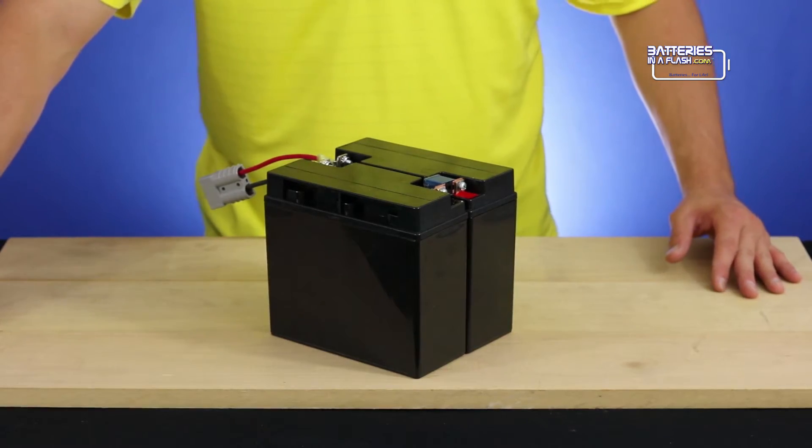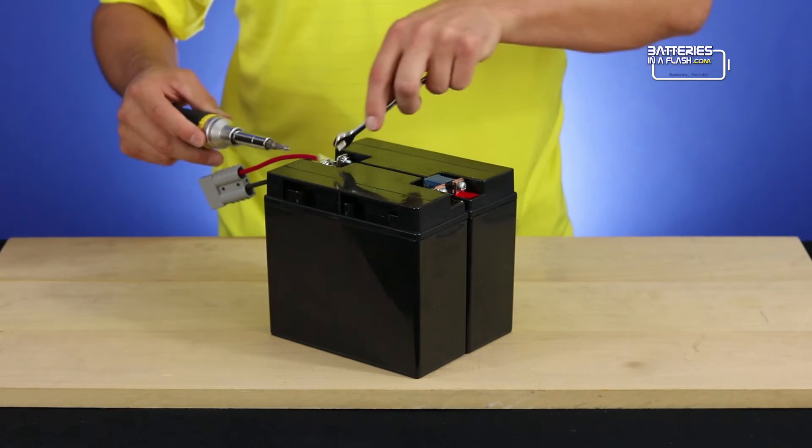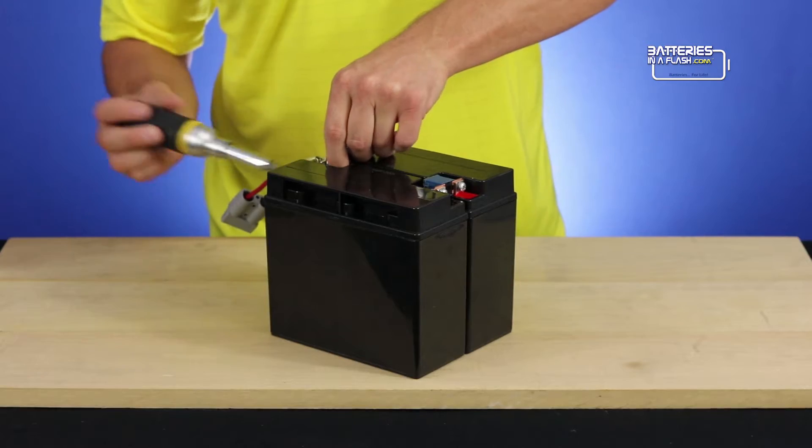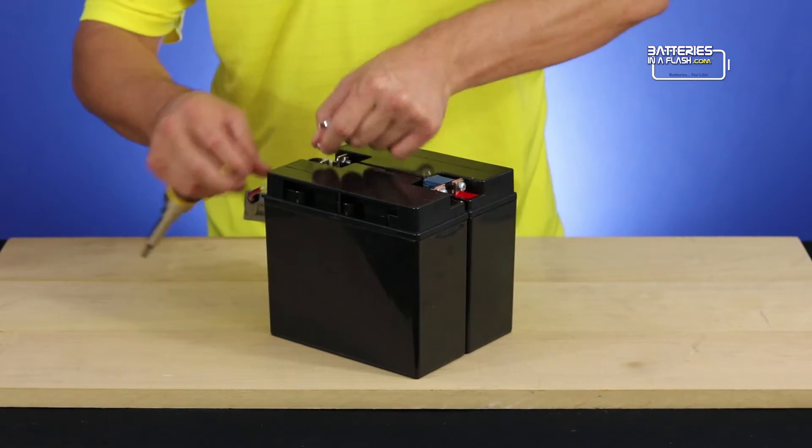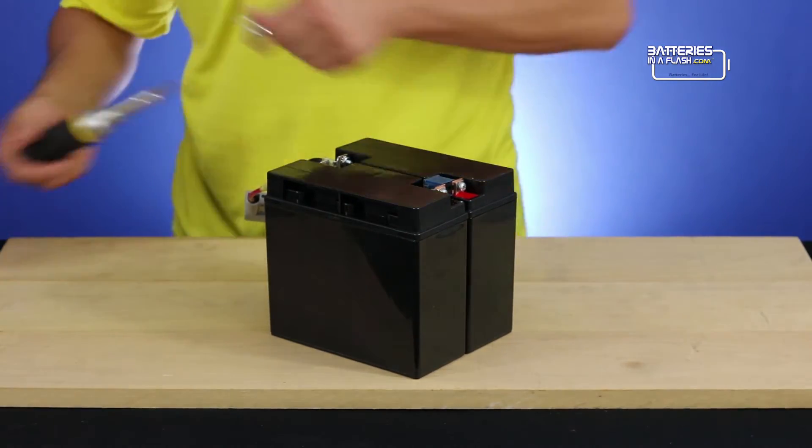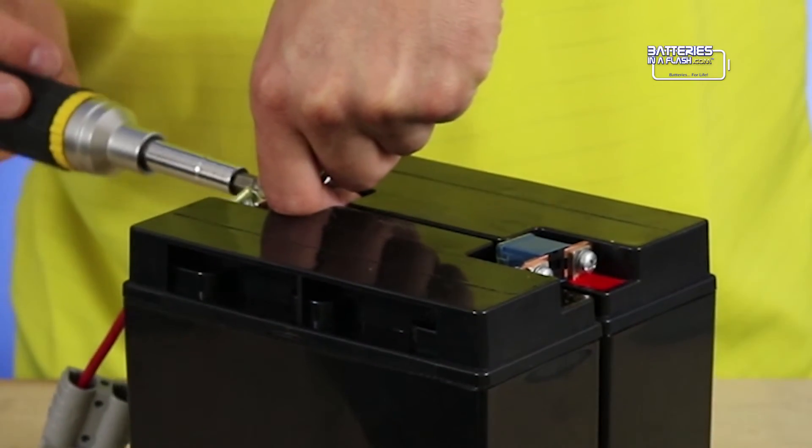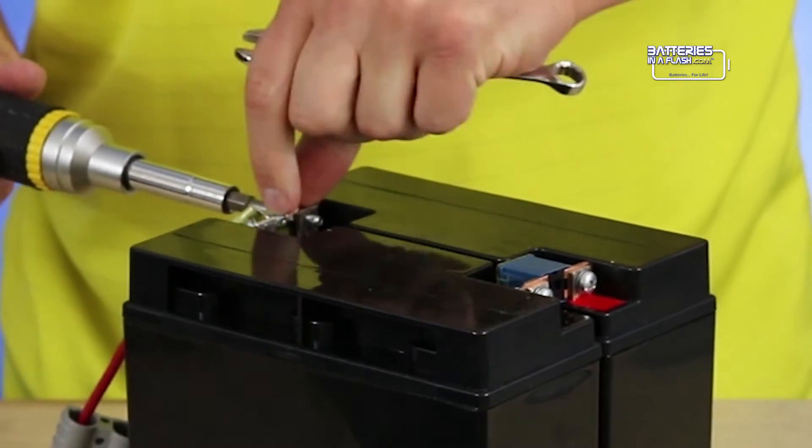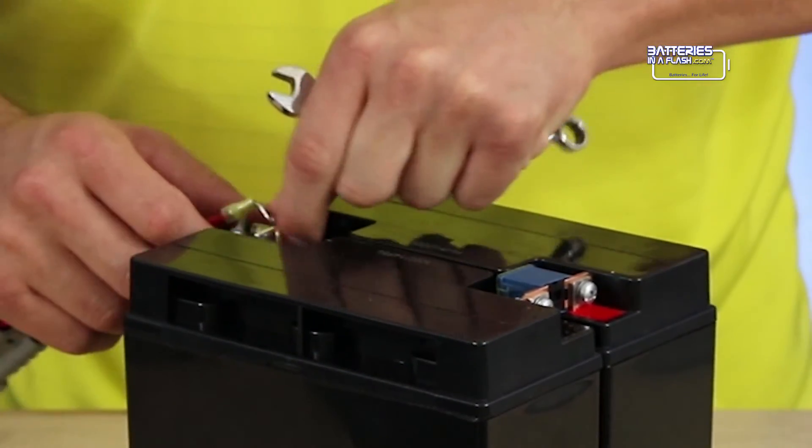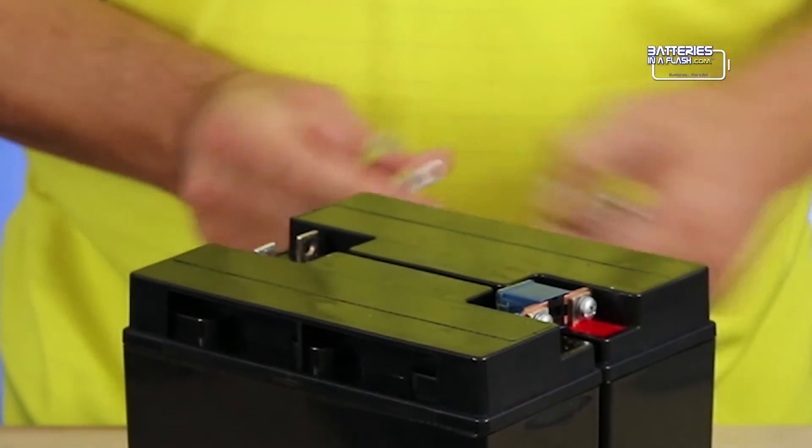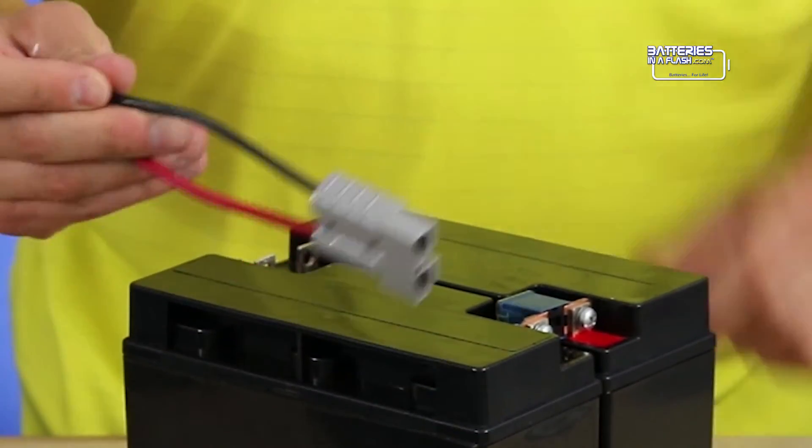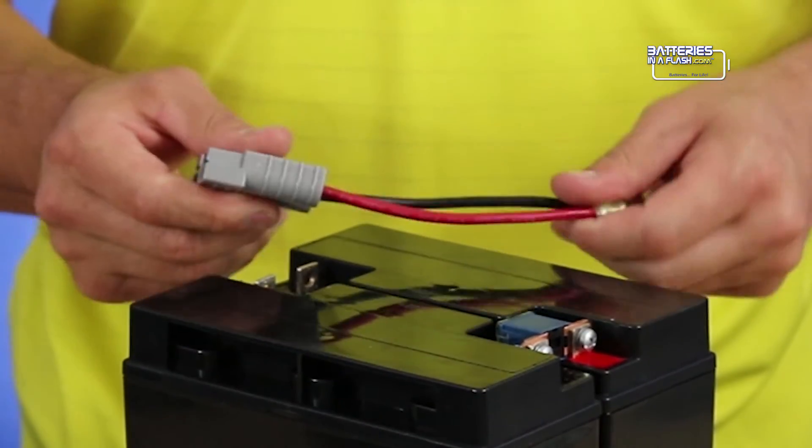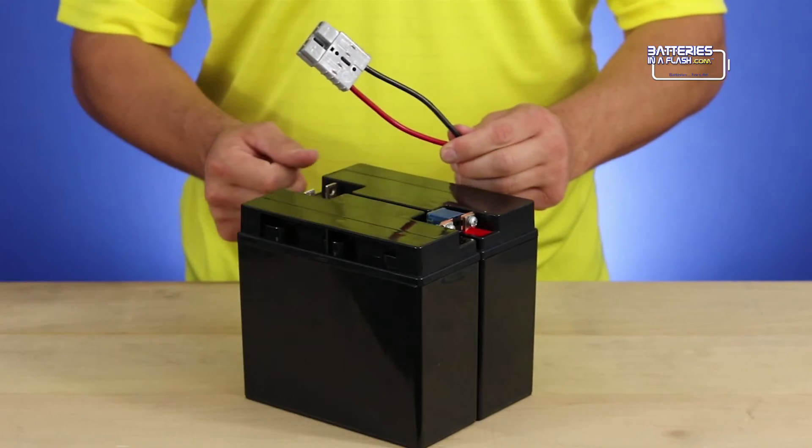Let's begin to remove the connector. To do this, we will need the Phillips screwdriver and a 3/8 wrench. Be sure to keep all your hardware to the side safely. You will need to use this to reconstruct your new battery. And be sure to inspect the wires and the casing of the connector. Make sure there are no nicks or damages on it, as you will be using it again.